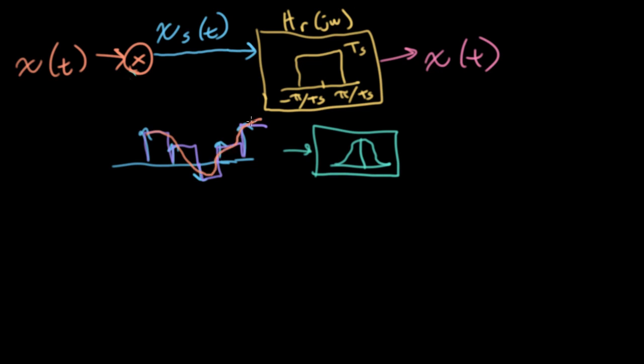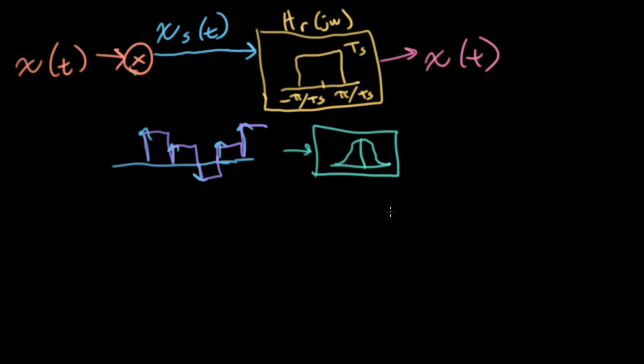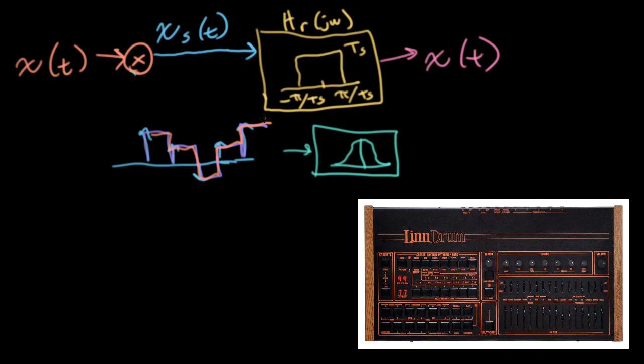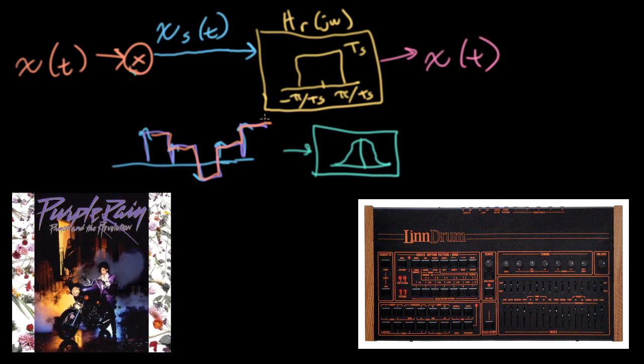That said, a lot of the early digital music instruments from the early 1980s would change the pitch of a sound by playing these samples back at different rates. And sometimes they wouldn't necessarily have an actual reconstruction filter, so the sound being played back would have all these sharp transitions. That was actually kind of part of the sound — the drum sounds from a LinnDrum machine, which was used by Prince, for instance.